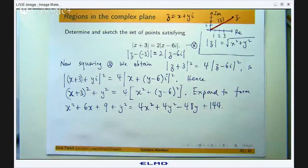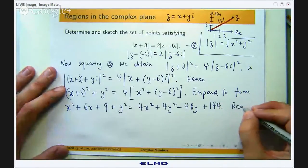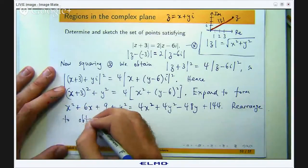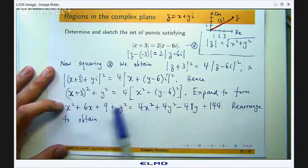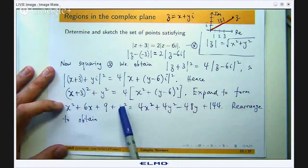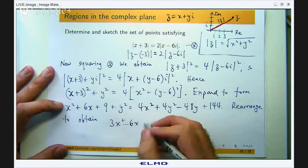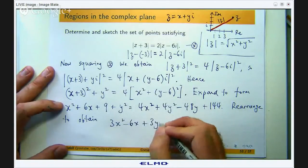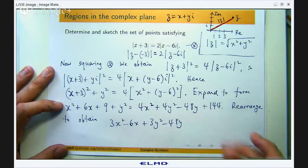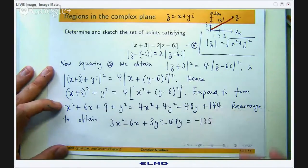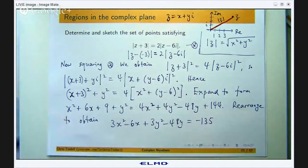All right so now let us rearrange. Let us put all the variables on one side and all the numbers on the other side. So let us rearrange to obtain the following. The x squared will go over there, the 6x will go over there, the y squared will go over there. So if we do that I will get 3x squared minus 6x plus 3y squared minus 16y, and the positive 144 will go over there so I will get negative 135. Now it is starting to look like the equation of a circle because the coefficients of the x squared and y squared are the same.